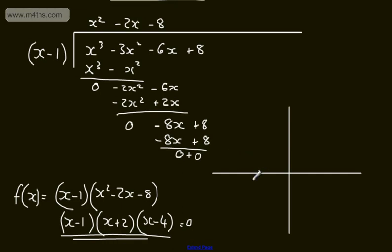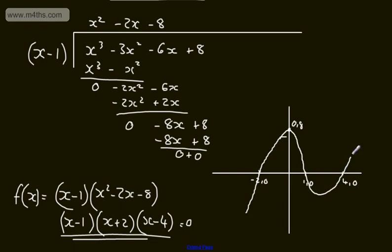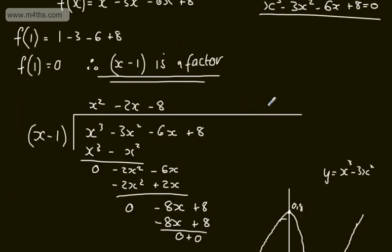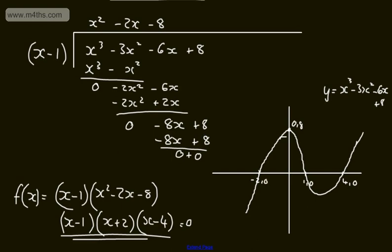We sketch the cubic passing through minus 2 comma 0, 1 comma 0, and 4 comma 0, and crossing the y-axis at 0 comma 8 — our constant term. The curve comes through that y-intercept, turns, and passes through all three roots. So y equals x cubed minus 3x squared minus 6x plus 8. That demonstrates how to use the factor theorem to factor a cubic expression and solve the resulting equation.